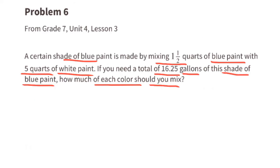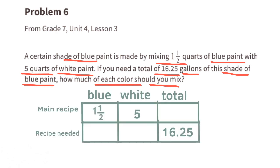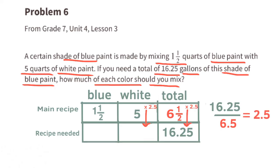Problem number 6, from 7th grade Unit 4 Lesson 3. A certain shade of blue paint is made by mixing 1.5 quarts of blue paint with 5 quarts of white paint. If you need 16.25 gallons of this shade, how much of each color should you mix? 1.5 plus 5 is 6.5, the total for the base recipe. 6.5 goes into 16.25 exactly 2.5 times. So you need 5 times 2.5 equals 12.5 gallons of white paint, and 1.5 times 2.5 equals 3.75 gallons of blue paint.